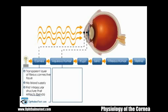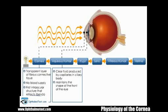After passing through the cornea, light passes through the aqueous humor. Aqueous humor is a clear fluid continually produced by capillaries in the ciliary body, the circular muscle that surrounds the edge of the lens. The physiologic functions of aqueous humor are to maintain the shape of the front of the eye, and to supply oxygen and nutrients to both the cornea and the lens.